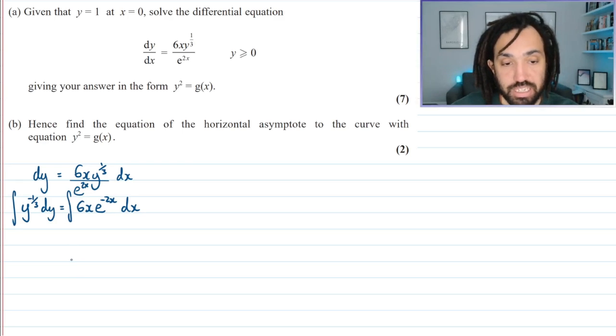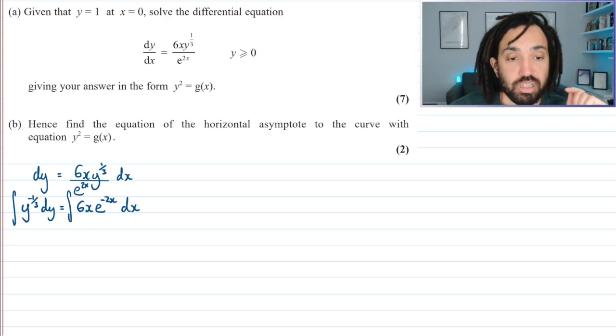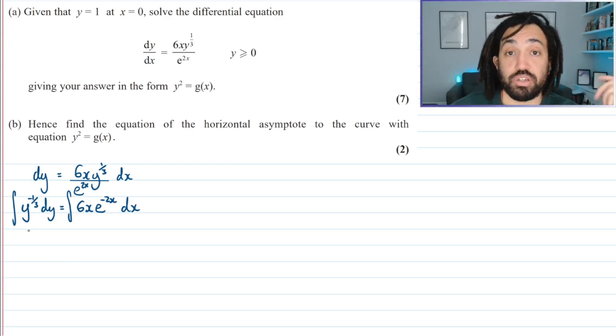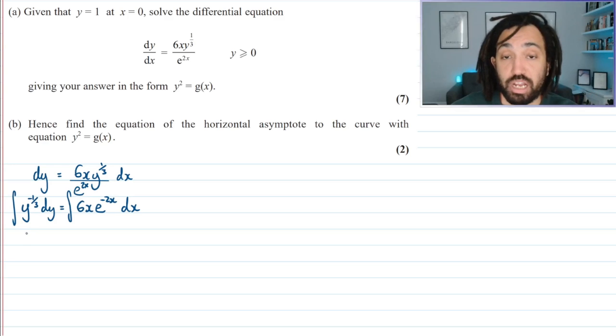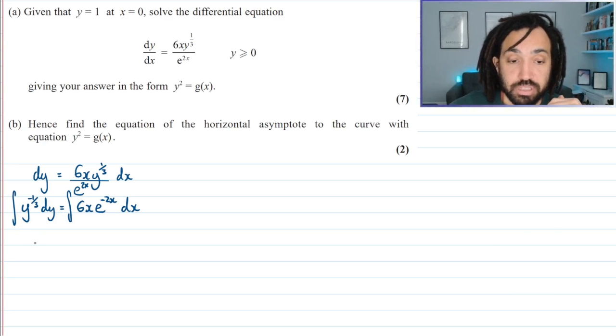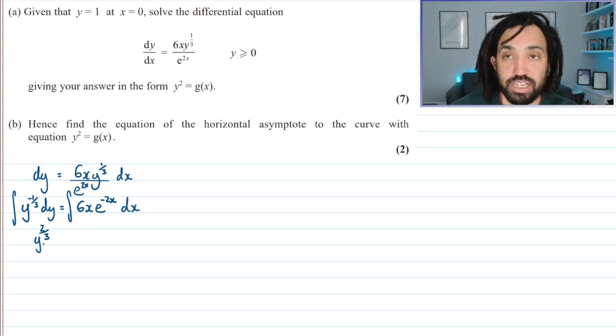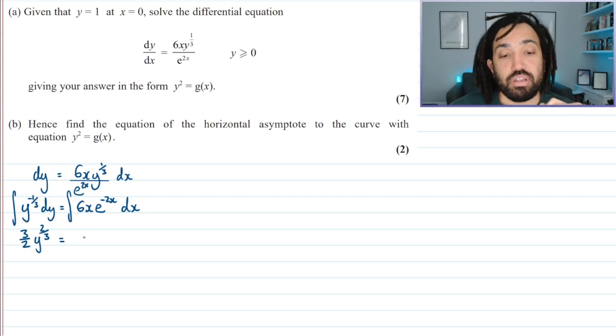So let's integrate the left hand side with respect to y. Well that's just a polynomial, so I can just use my power rule: up the power by 1, divide by the new power. So upping the power by 1 is going to give me 2 thirds, and then dividing by the new power of 2 thirds is the same as timesing by 3 over 2.